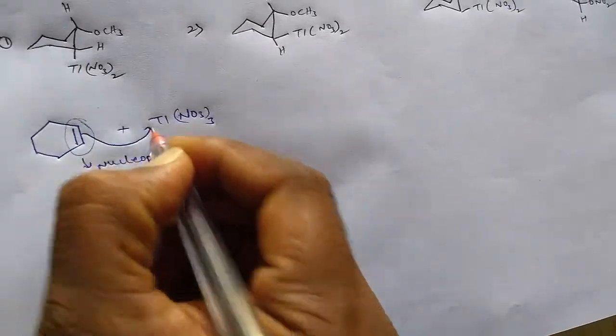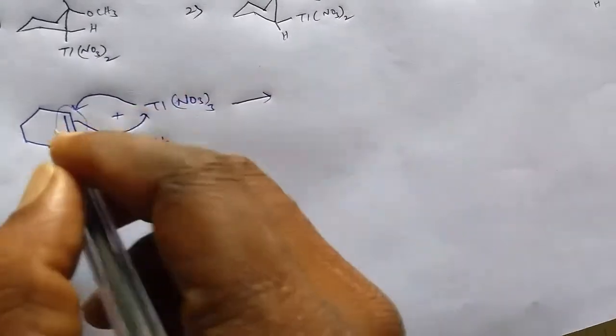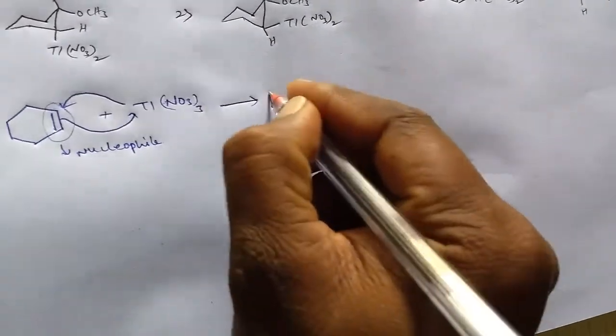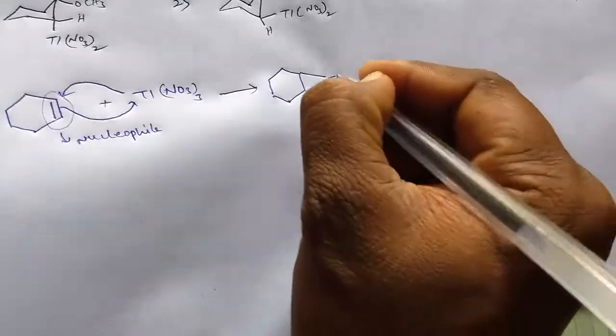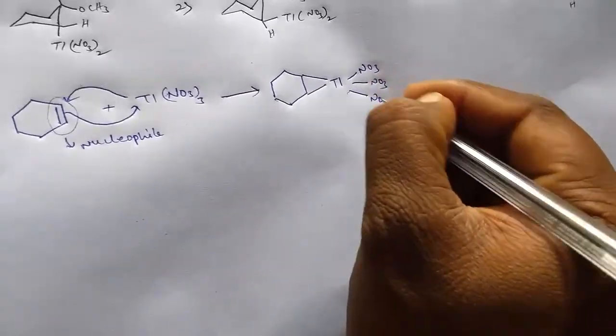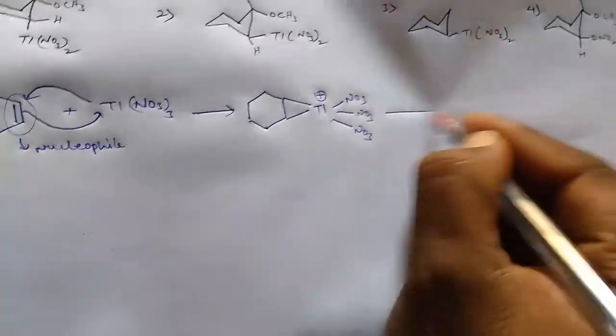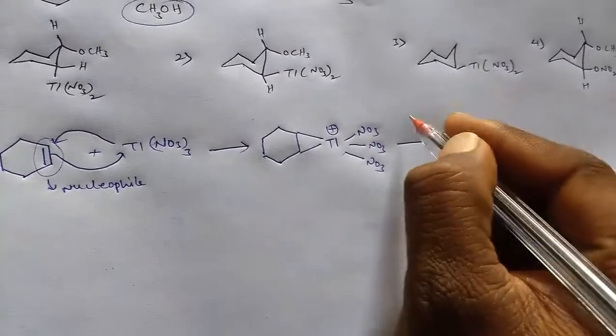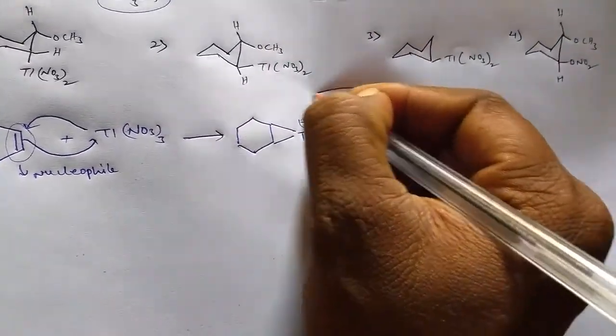From the thallium, it bonds with this electrophilic part of the cyclohexene. So this will get a bond and thallium gets a positive charge.